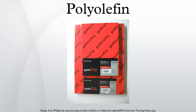Polypropylene is another common polyolefin which is made from the olefin propylene. Industrial polyolefins include thermoplastic polyolefins, polyethylene, polypropylene, polymethylpentene, and polybutylene-1.